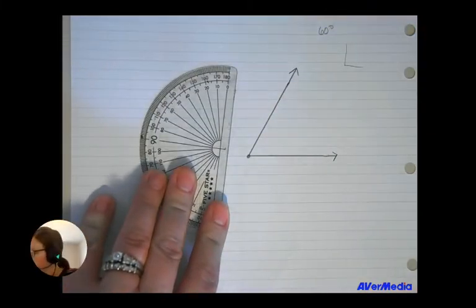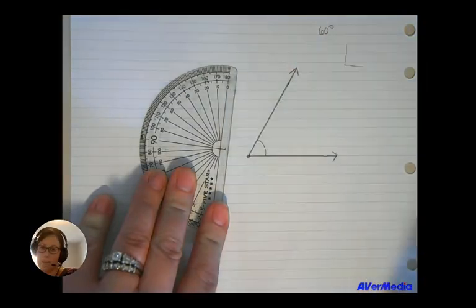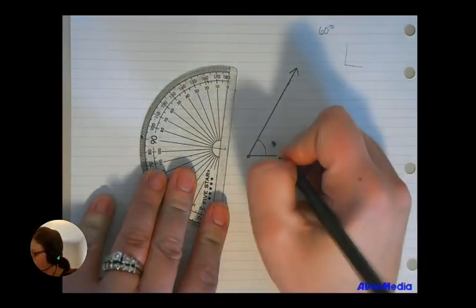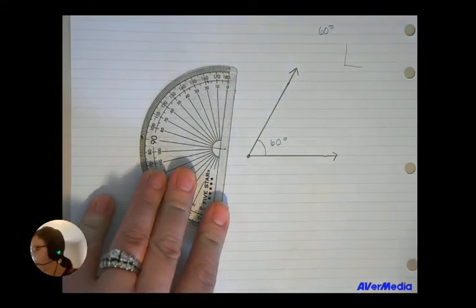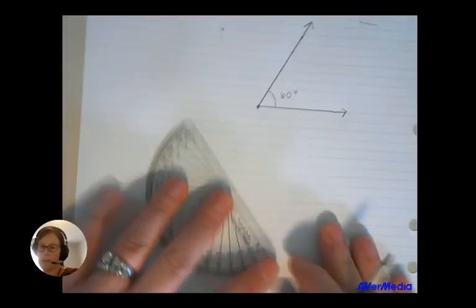There's my completed angle. And then I'm going to draw myself a little semicircle, half circle there, and record my measurement of 60 degrees. So that is how we draw an acute angle.